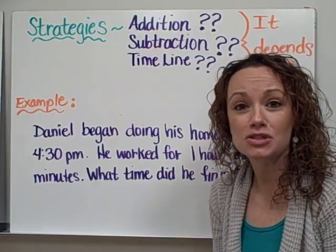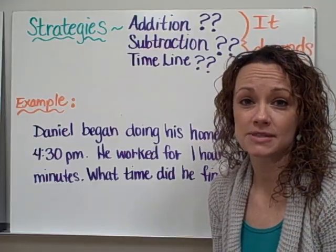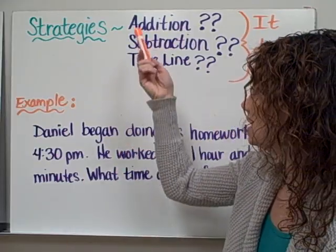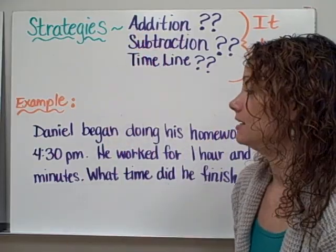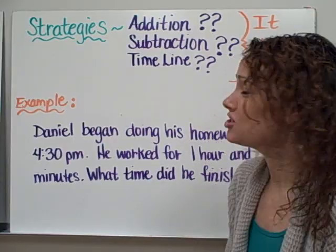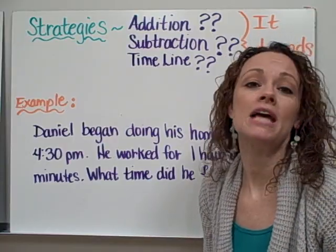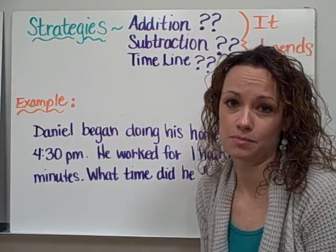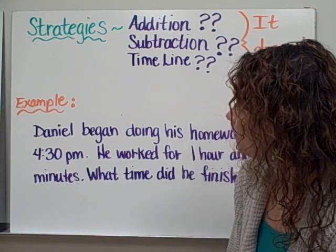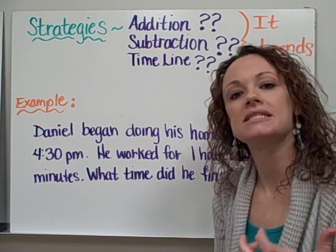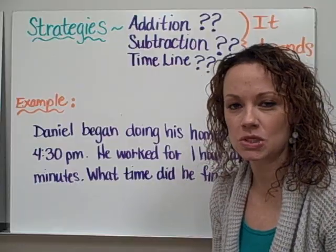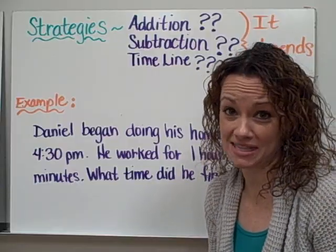How do we solve problems using elapsed time? Well, there are a lot of different methods you can use: addition, subtraction, timeline. Which one's best? It actually all depends on what type of problem you're looking at. I like to use timelines often because they help me see the time that has gone by or the time that has passed. So I'll be showing you that method today.